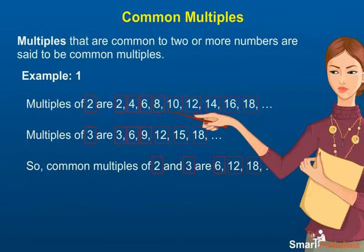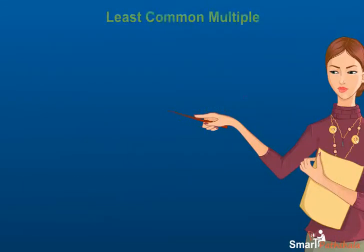Multiples of 3 are 3, 6, 9, 12, 15, 18 and so on. So, common multiples of 2 and 3 are 6, 12, 18 and so on.